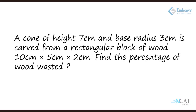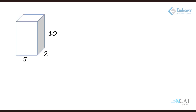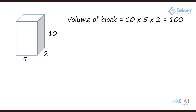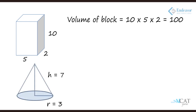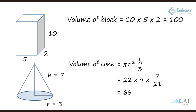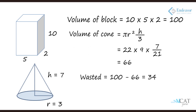A cone of height 7 cm and base radius 3 cm is carved out from a rectangular block of wood which is 10 cm by 5 cm by 2 cm. Find the percentage of wood wasted. The block is a cuboid with volume L into B into H — 10 into 5 into 2 which is 100 cubic centimeters. The cone's volume is 1 by 3 pi r square h — pi into 9 into 7 divided by 3 — giving approximately 66 cubic centimeters. The wastage is 100 minus 66 which is 34 cubic centimeters. Using such simple but straightforward formulas, it is all about application that helps us through mensuration. Happy solving!